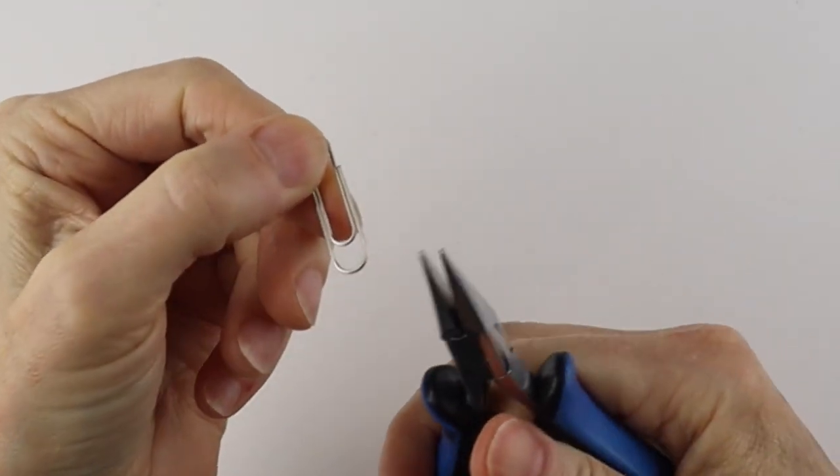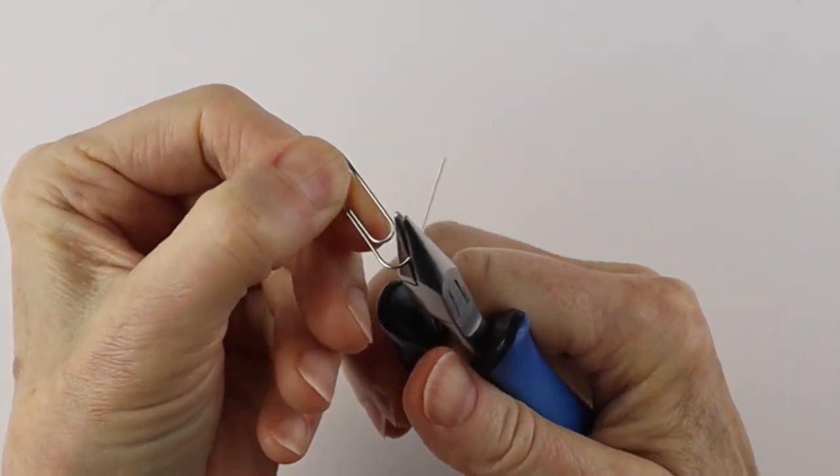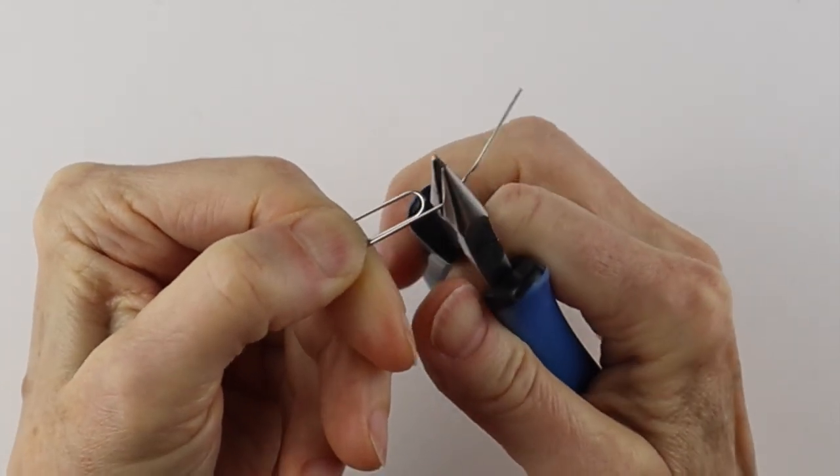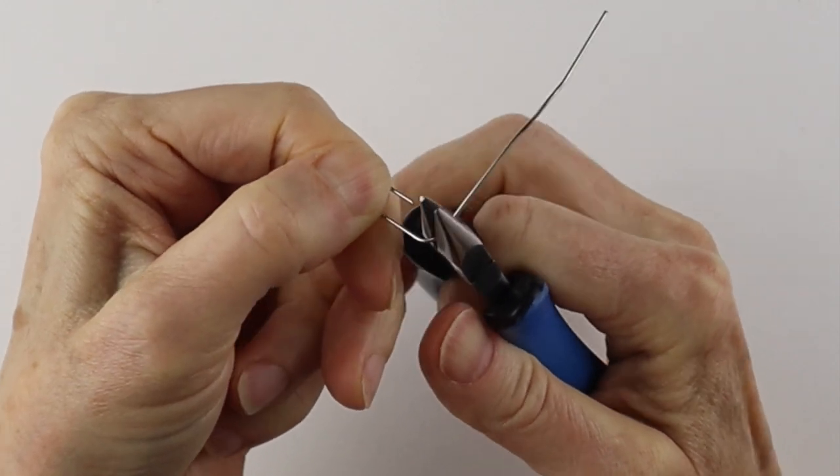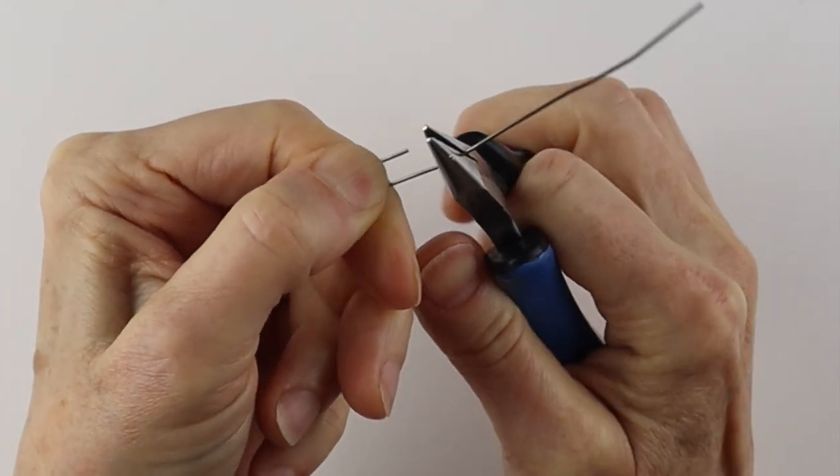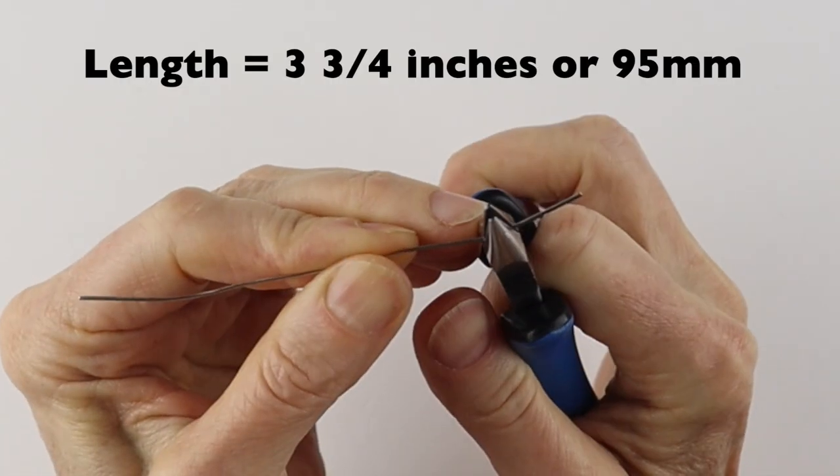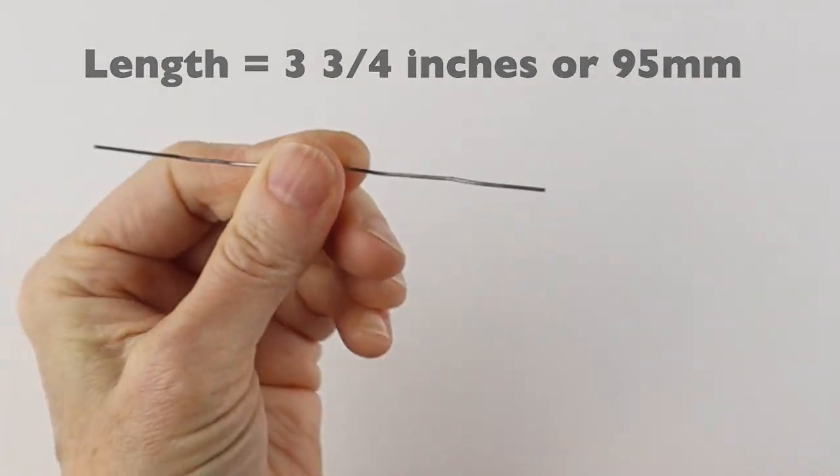We always start with opening up the paperclip with our flat pliers. You can do this by hand, but it's easier to do with the pliers. So just go slowly and pinch it along as you go. You just want to get it as straight as you can.